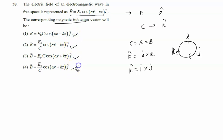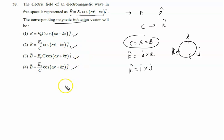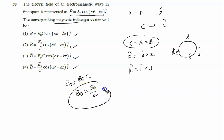Since all four options appear to have the magnetic field along ĵ, we now check the magnitude. We know E₀ is very large compared to B₀, and E₀ = B₀ × c, so B₀ = E₀/c. Therefore, B = B₀ cos(ωt - kz) ĵ, where B₀ = E₀/c.